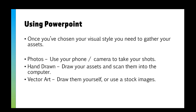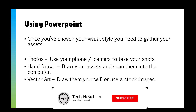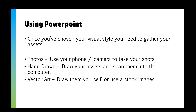Once you've chosen your visual style you need to gather your assets. For photos you can just use your phone or camera. If you want a hand-drawn style you can draw your assets and scan them into the computer. If you want vector art you can draw them yourself or use a stock images site such as Freepik or Storyboard to get some vectors from there.